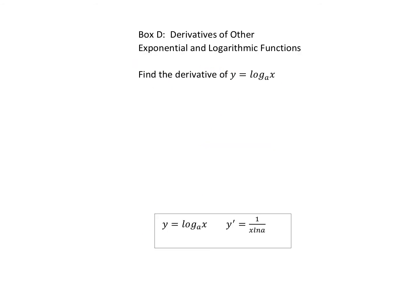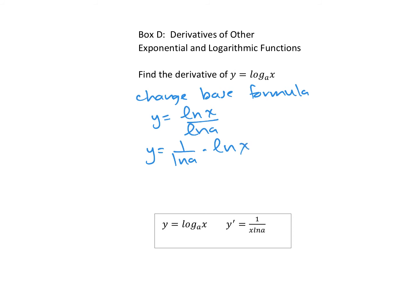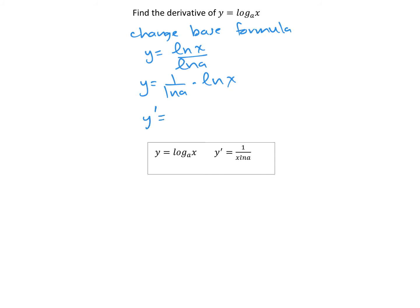There are other derivatives: the derivative of log base a of x. Using the change of base formula, log_a(x) becomes ln(x) over ln(a). Since 1 over ln(a) is just a constant, we can bring it out. The derivative of ln(x) is 1 over x, so y prime equals 1 over (x · ln(a)).